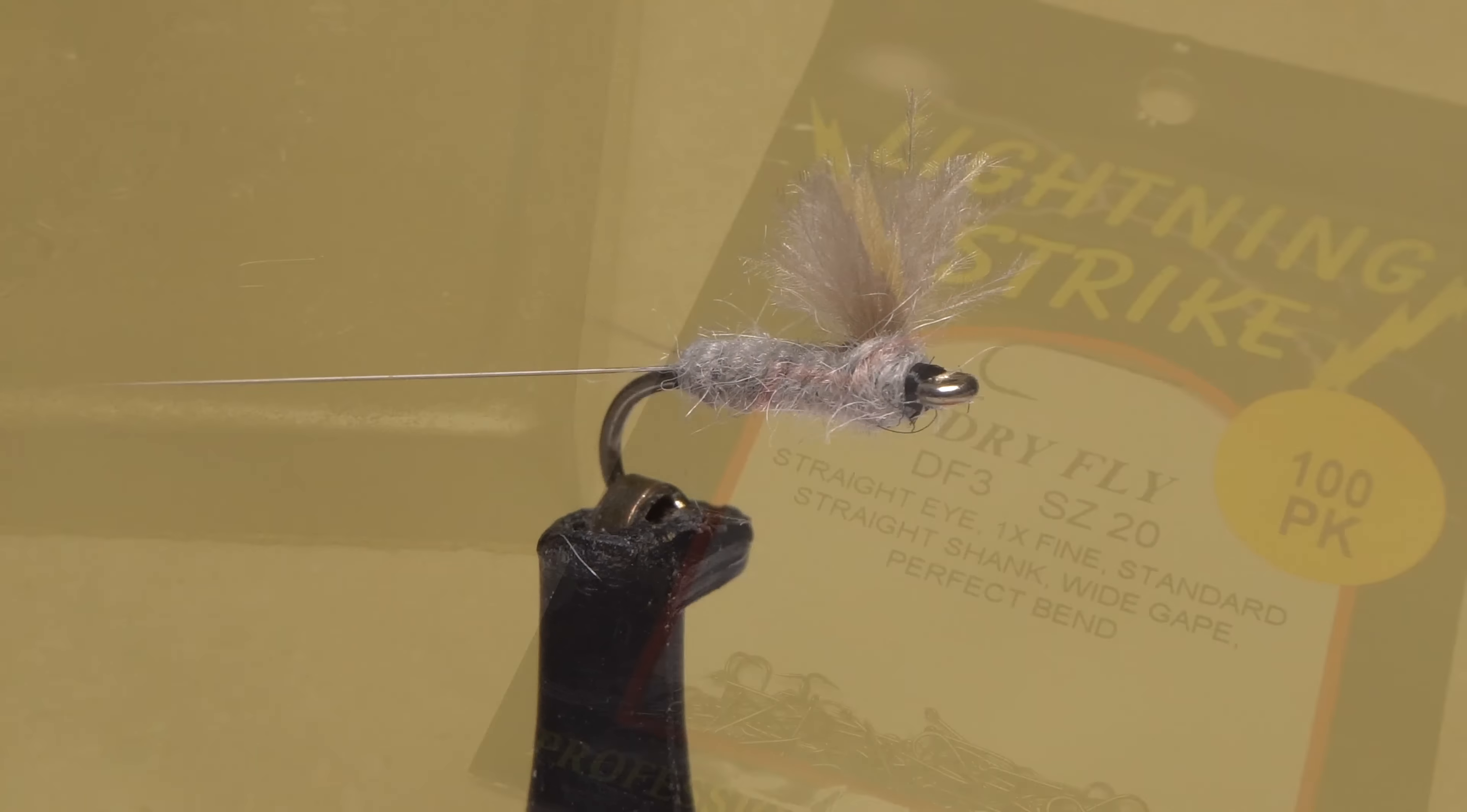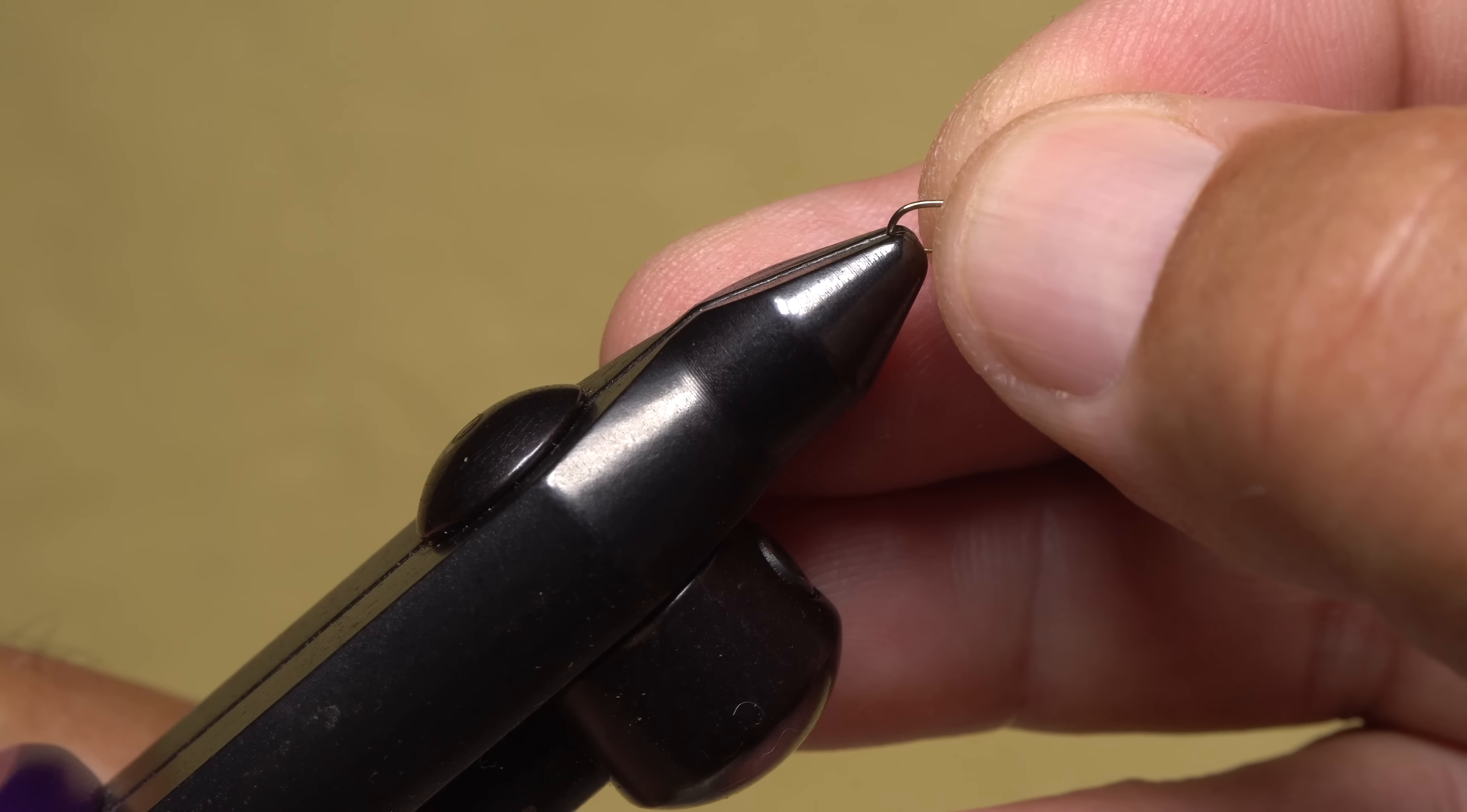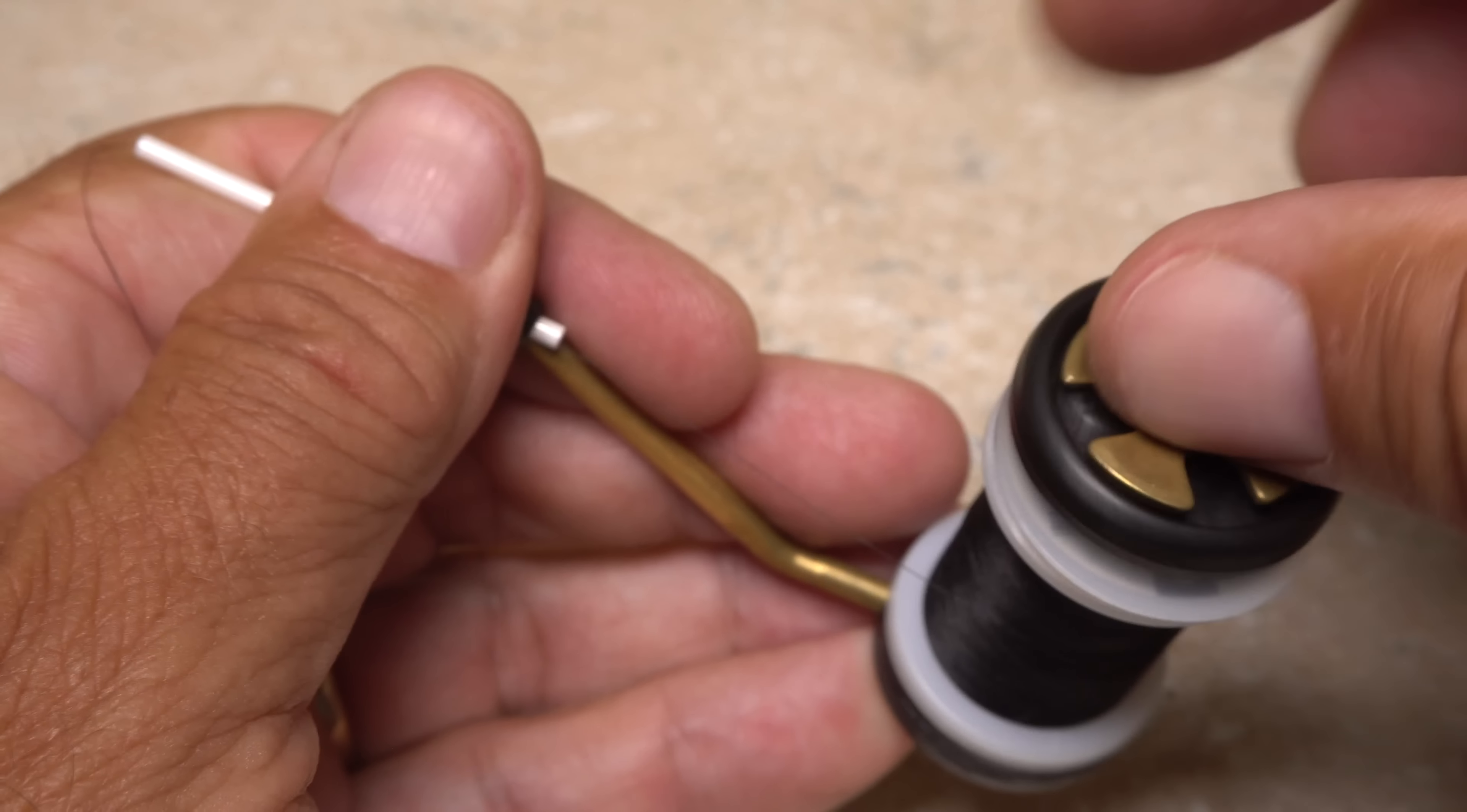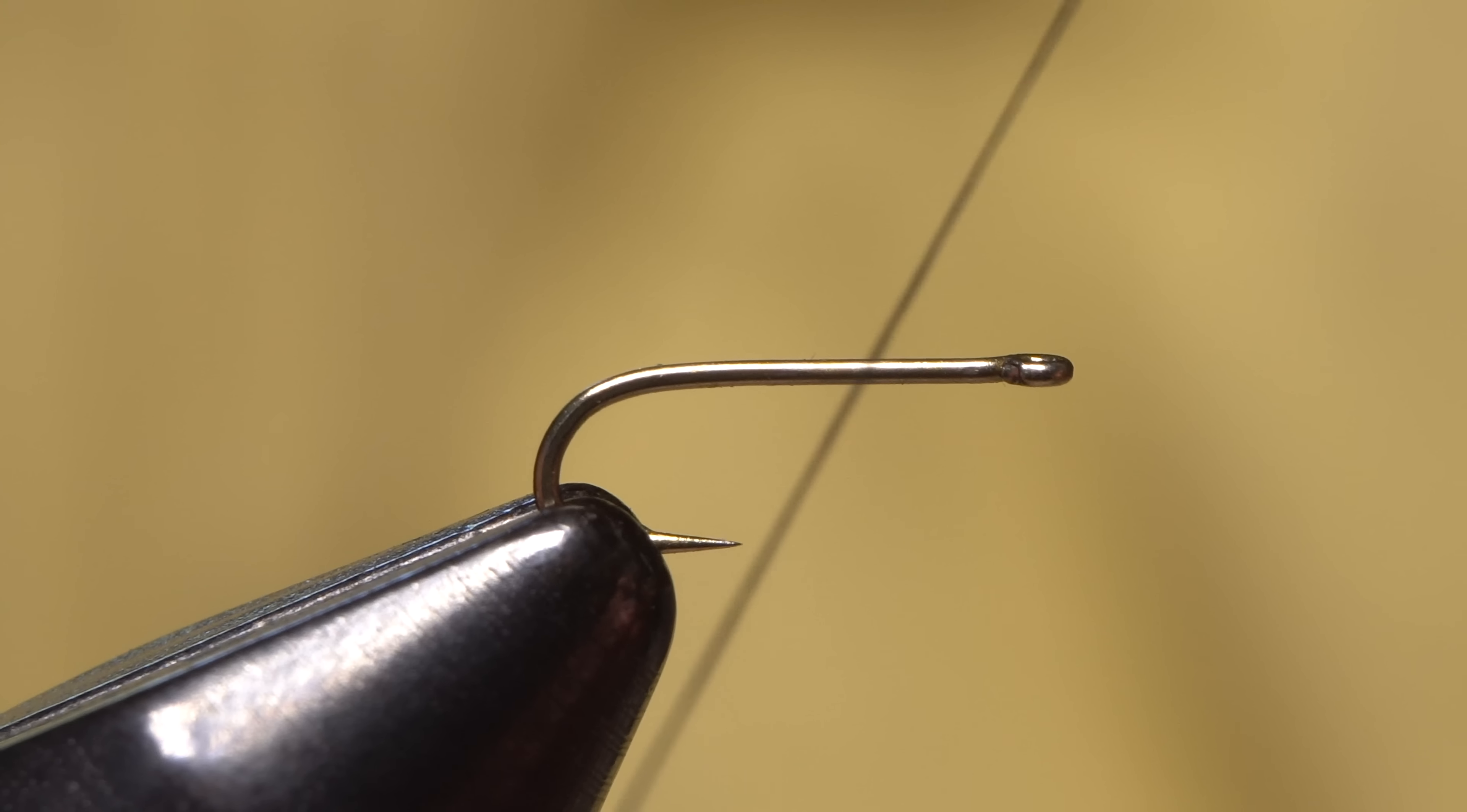With RS2s, I definitely like the look of a straight or ring eye, so here I've selected a Lightning Strike DF3 dry fly hook in size 20, even though the RS2 is traditionally not used as a dry fly. After getting the hook firmly secured in the jaws of my tying vise, I load a bobbin with a spool of Vivas 12-aught black thread.